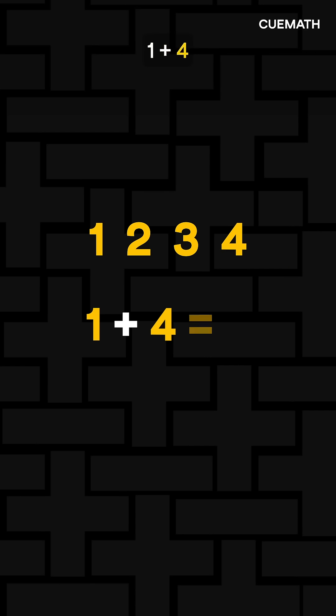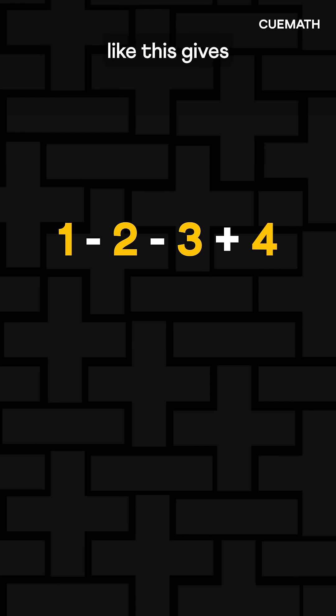With 1 to 4, 1 plus 4 gives 5, so do 2 and 3. Placing the signs like this gives 0.